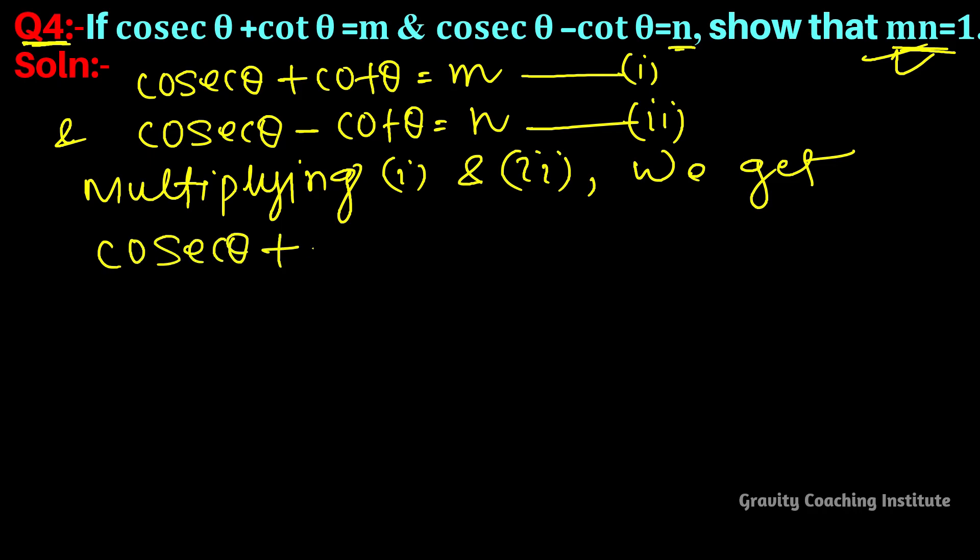(cosec θ + cot θ)(cosec θ - cot θ) = m × n, and we use the algebraic identity.